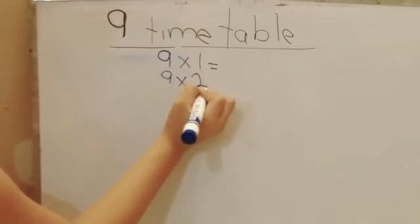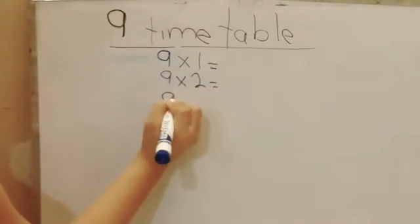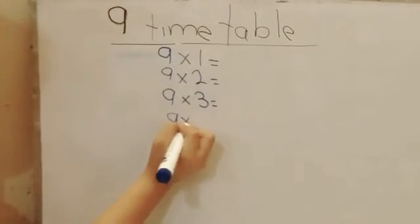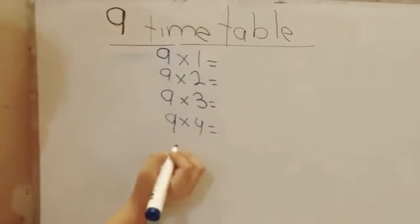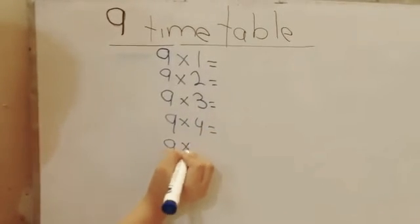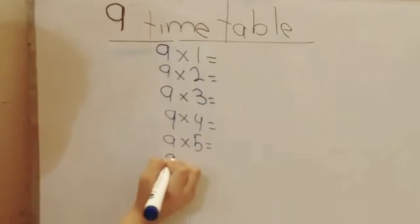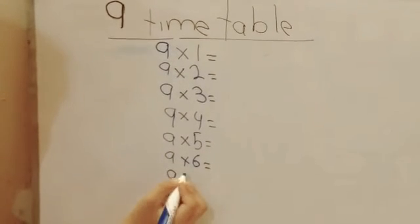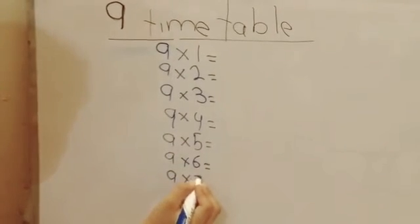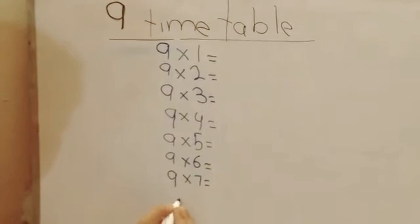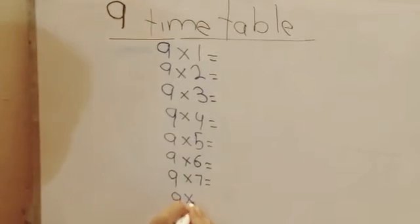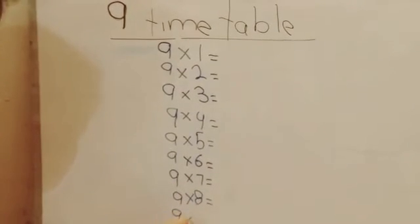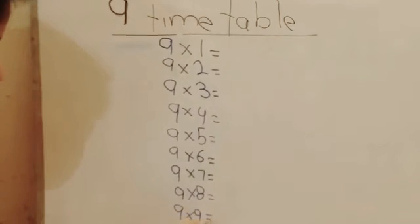9 multiplied by 2 equals, 9 multiplied by 3 equals, 9 multiplied by 4 equals, 9 multiplied by 5 equals, 9 multiplied by 6 equals, 9 multiplied by 7 equals, 9 multiplied by 8 equals, 9 multiplied by 9 equals.